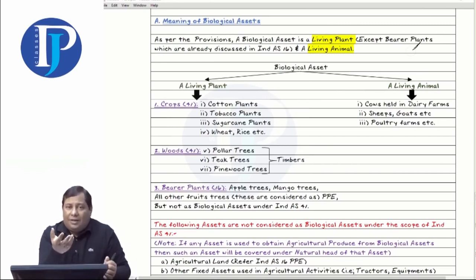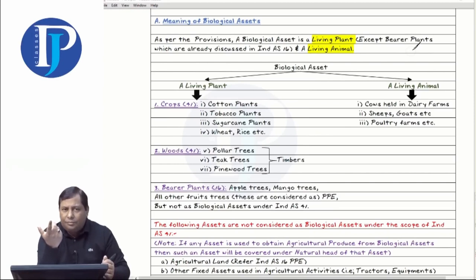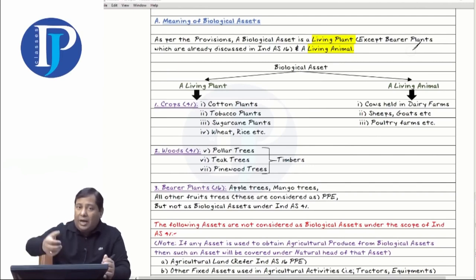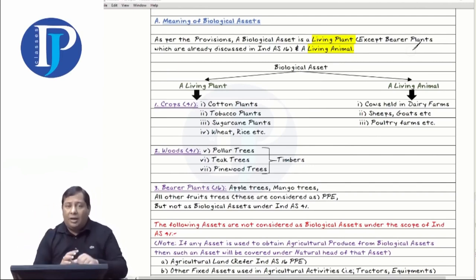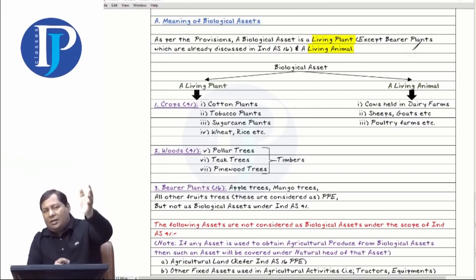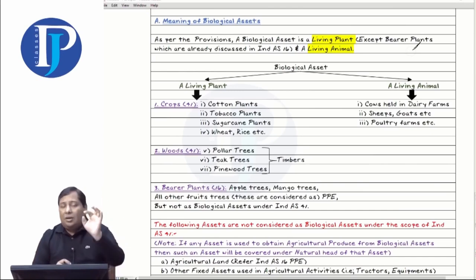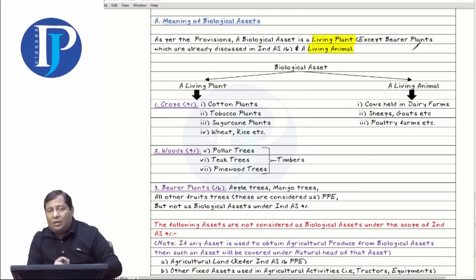All your fruit trees — trees which give any fruit or other agricultural produce — take the example of a rubber plant which gives latex with a life of 25-30 years. All plants which are not cut down but continue to provide agricultural produce are bearer plants, treated like a factory with continuous production. Bearer plants come under INDS-16, but all crops and wood trees come under INDS-41.